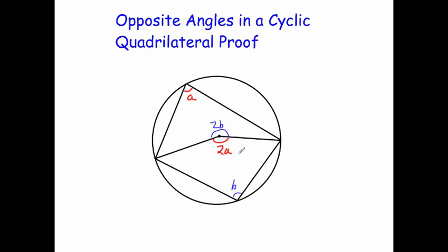Again, we've got the angle at the circumference and the angle at the centre. So we've got that if that's A, that's 2A, and if that's B, that will be 2B. And that's just using that theorem from earlier on.